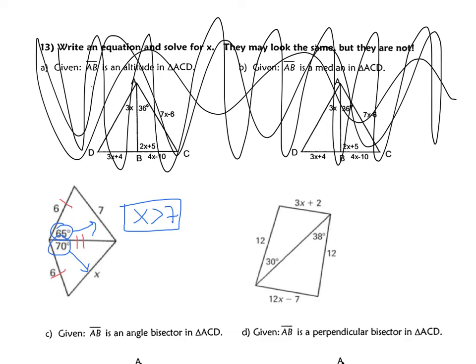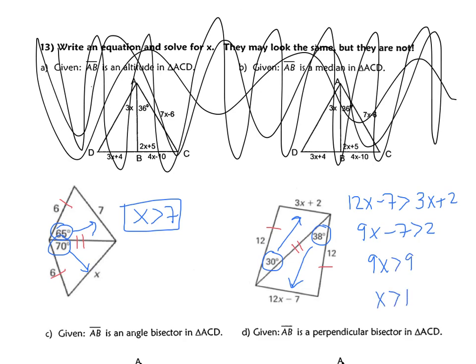Pause the video and try to set up the second example by yourself. Does the hinge theorem apply? I have 12 and 12, and the reflexive property gives two pairs of congruent sides. I have angles 38 and 30. 38 is larger, so the side across from 38 is larger: 12x − 7 is greater than 3x + 2. Subtracting 3x gives 9x − 7 > 2, adding 7 gives 9x > 9, so x > 1. Please write down any questions for class tomorrow.